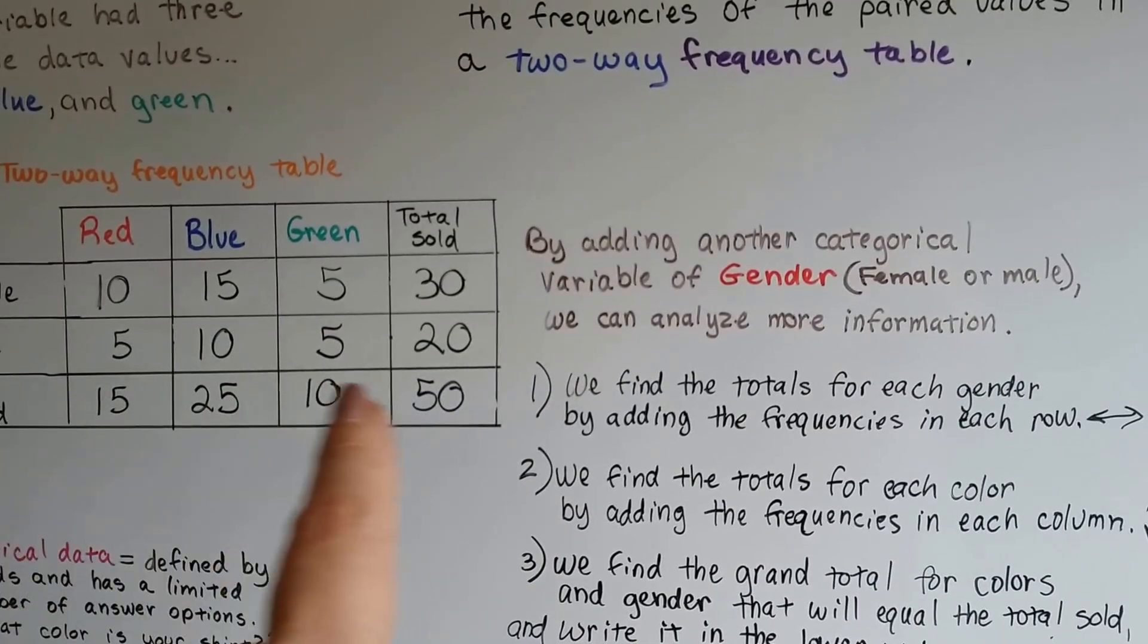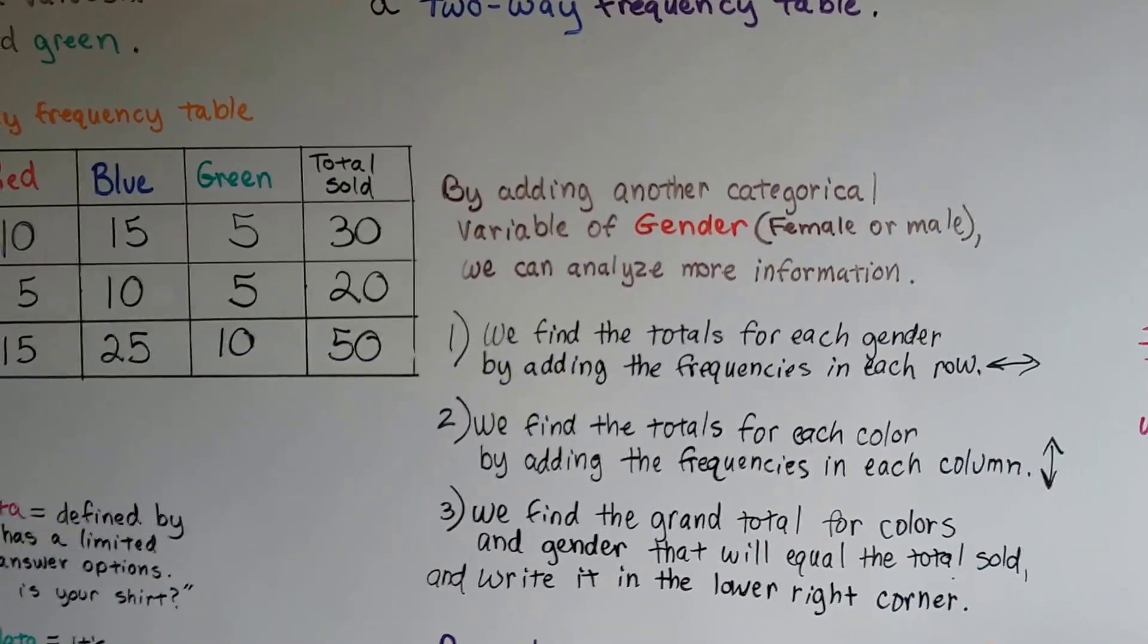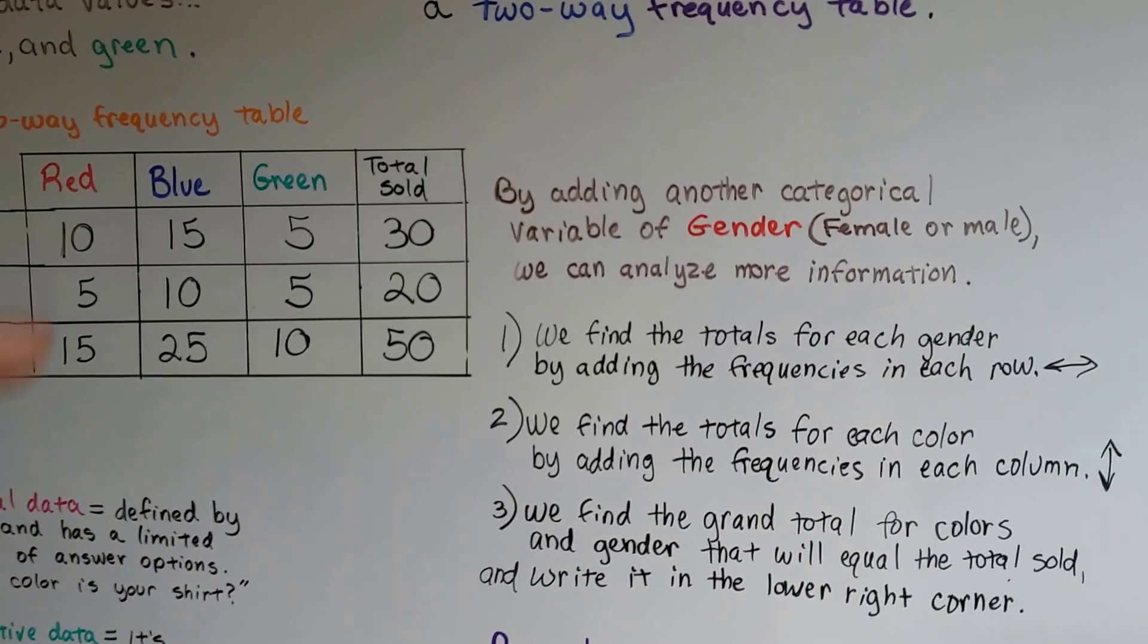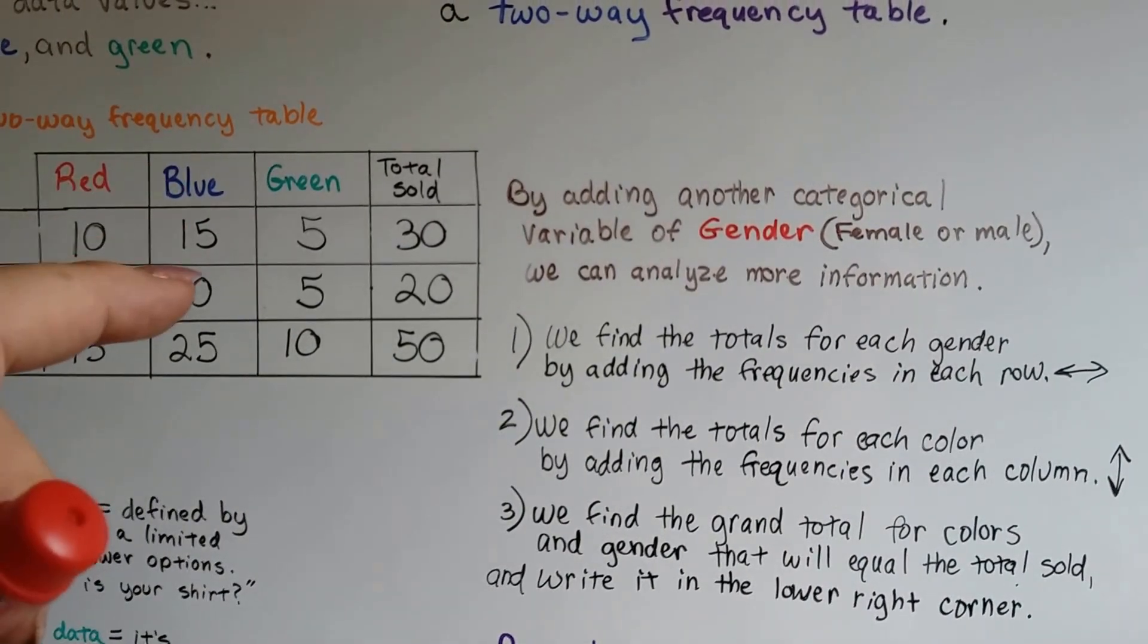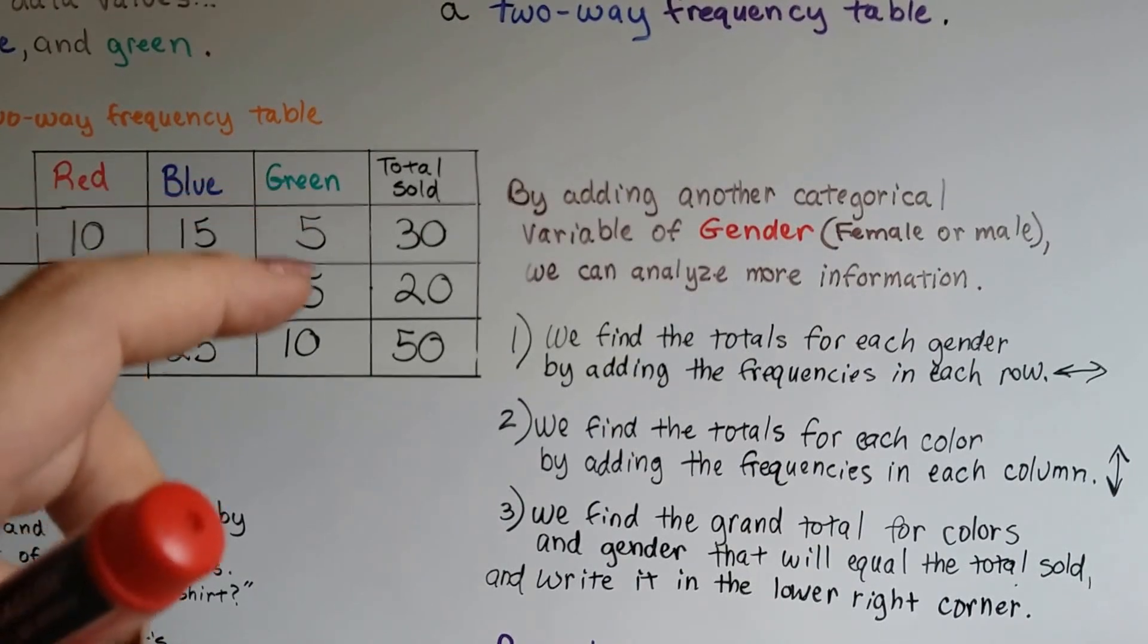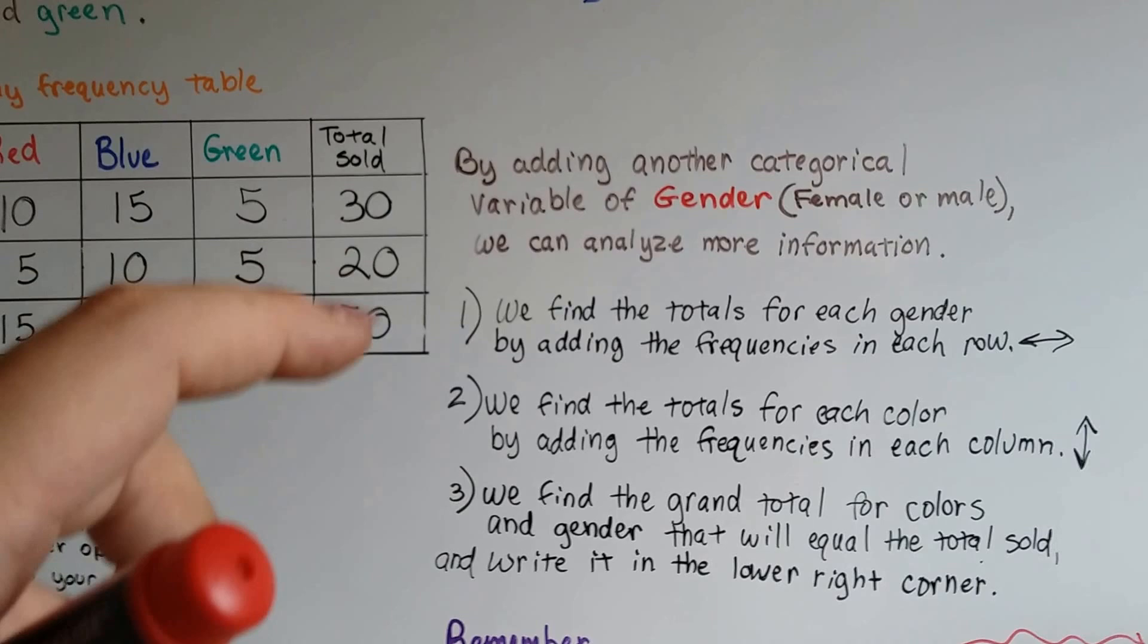And we can add these going across, 15, 25, and 10 is 50. And we find the totals for each color by adding the frequencies of each column. Red is 10, 5, that makes 15. Blue is 15 and 10, that makes 25. And green is 5 and 5, that makes 10. And then we can do the column totals. 30 and 20 is 50.